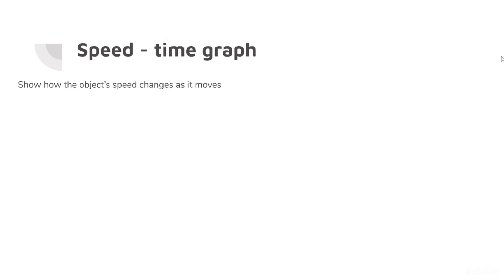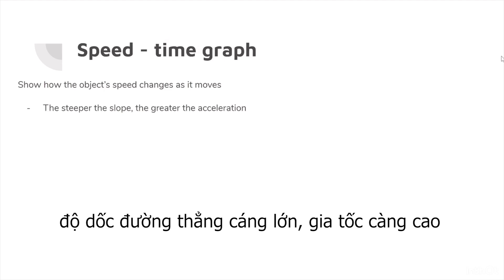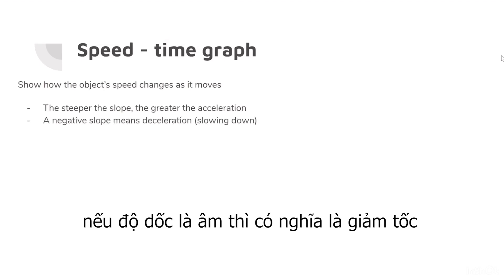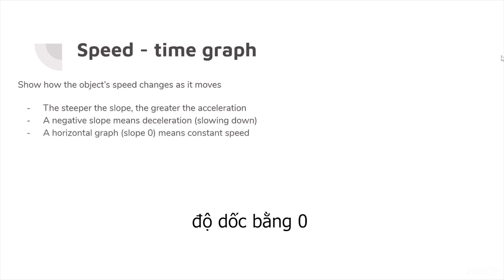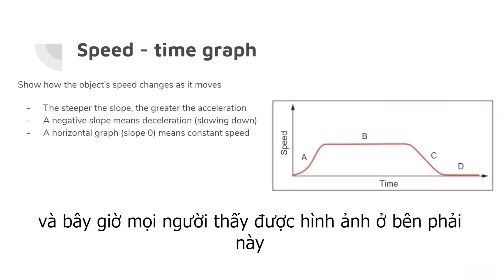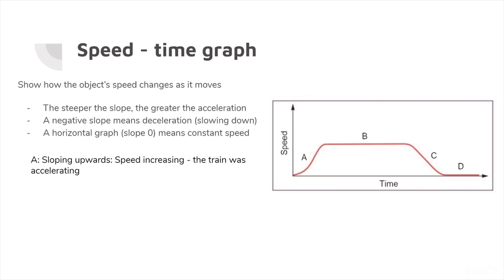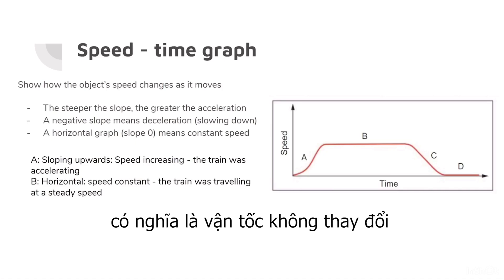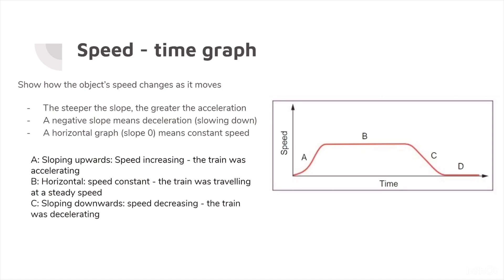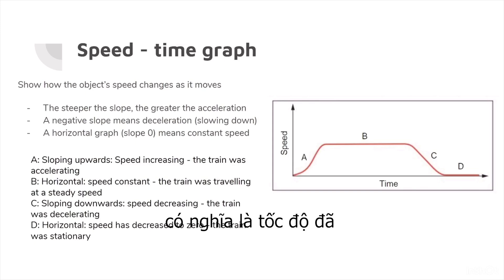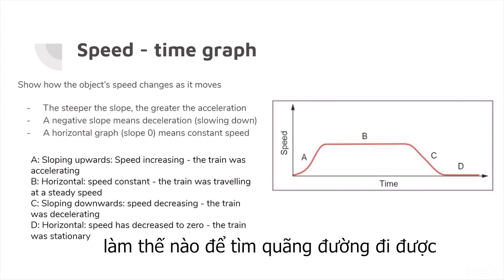Section 2.3: Understanding Acceleration. A speed-time graph shows how an object's speed changes as it moves. The steeper the slope, the greater the acceleration. A negative slope means deceleration (slowing down), and a horizontal slope (slope = 0) means constant speed. Section A slopes upward (accelerating), Section B is horizontal (constant speed), Section C slopes downward (decelerating), and Section D is horizontal at zero (stationary).